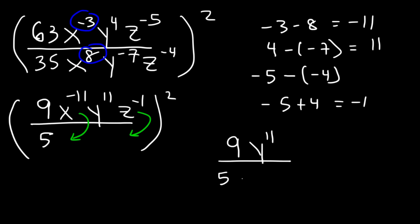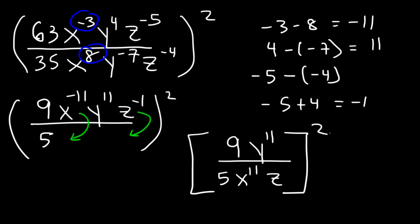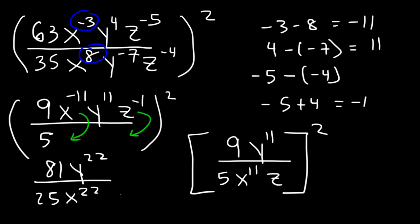So it's going to be 5x to the 11th times z to the 1st power, or simply z. Now we still have to deal with the square. 9 squared is 81 — that's 9 times 9. 11 times 2 is 22. 5 squared is 25. And 11 times 2 is also 22, and 1 times 2 is 2. So this is the final answer: 81y to the 22nd over 25x to the 22nd z squared.